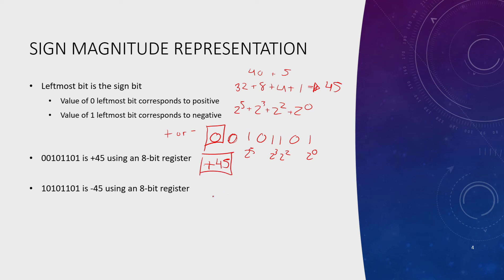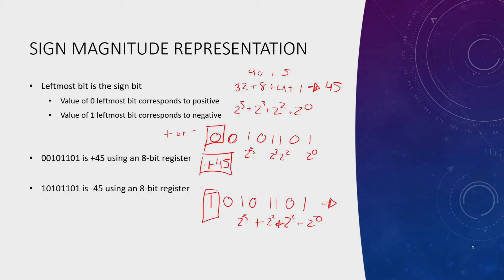For negative 45, we do the same thing: 2^5 + 2^3 + 2^2 + 2^0. Remember, the sign bit does not add to the value — it only changes whether the number is positive or negative. The magnitude is still 45, but since the leftmost bit is 1, this is negative 45.